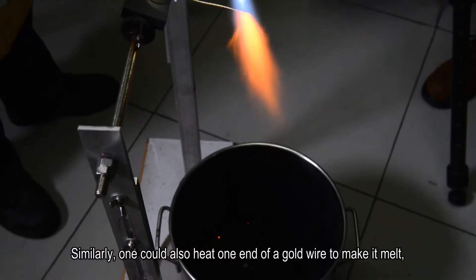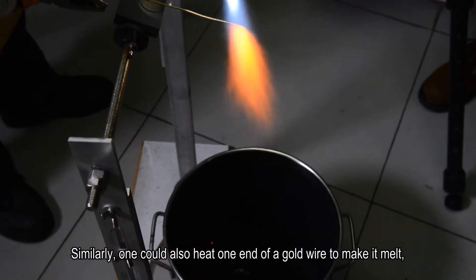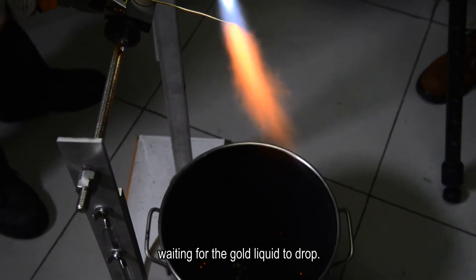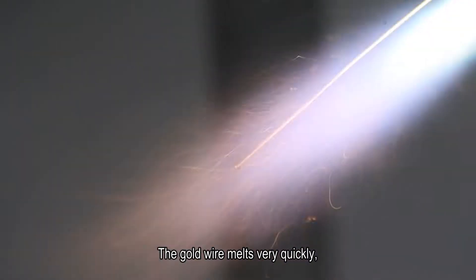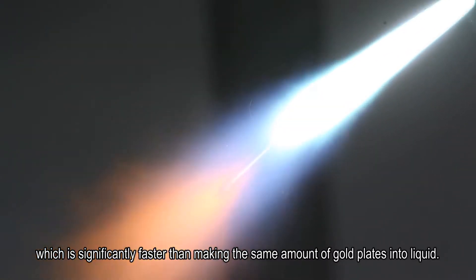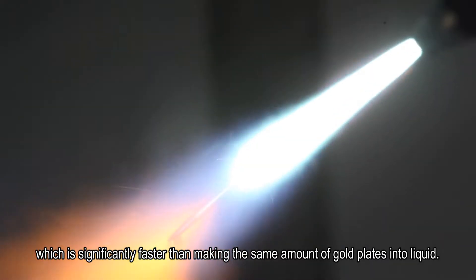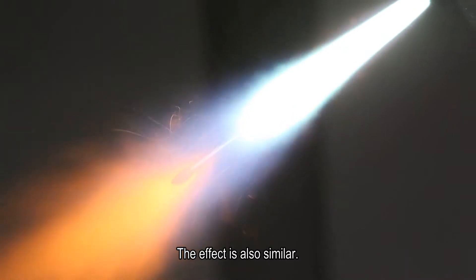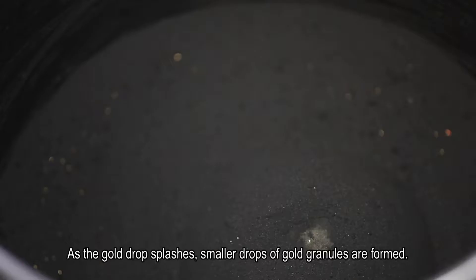Similarly, one could also heat one end of a gold wire to make it melt, waiting for the gold liquid to drop. The gold wire melts very quickly, which is significantly faster than making the same amount of gold plates into liquid. The effect is also similar. As the gold drop splashes, smaller drops of gold granules are formed.